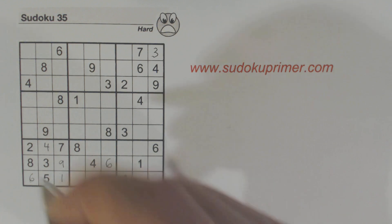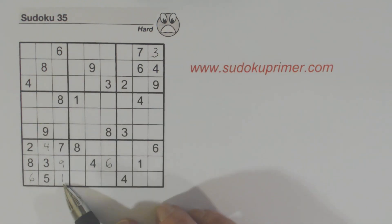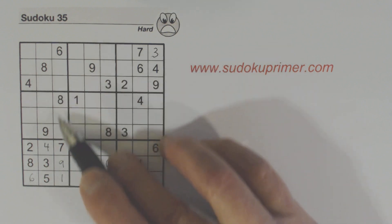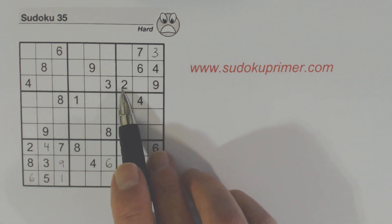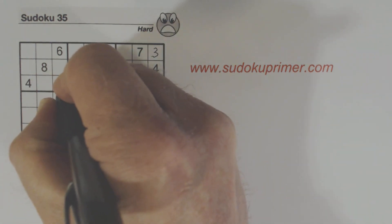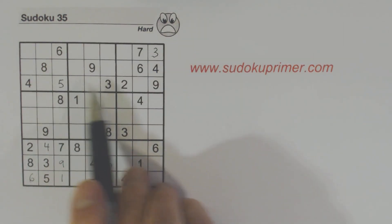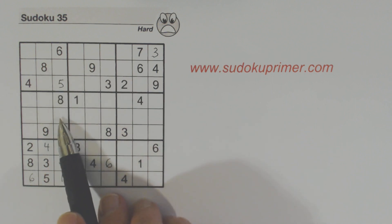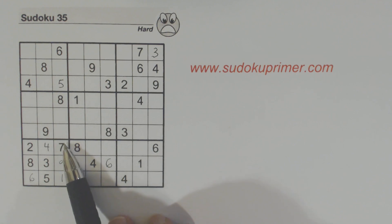Now let's look at this column right here. We're missing 2, 3, 4, and 5. We've got a 2, 3, and a 4 here, so we know that's a 5. So we have 2, 3, and 4 left — but we can't solve any more there.